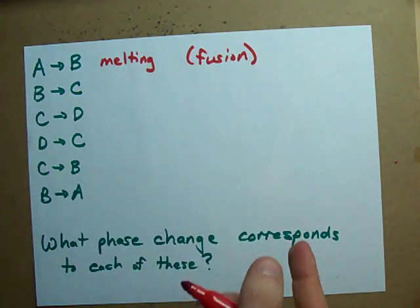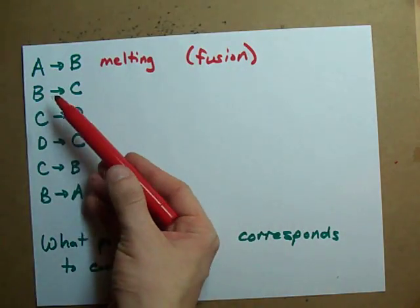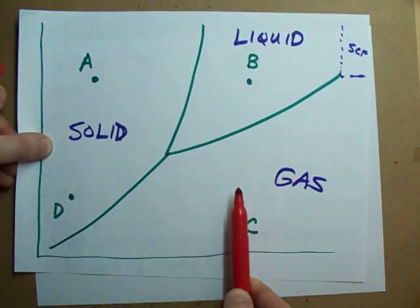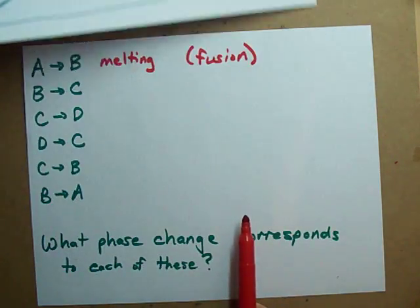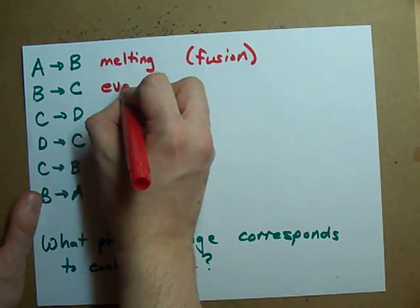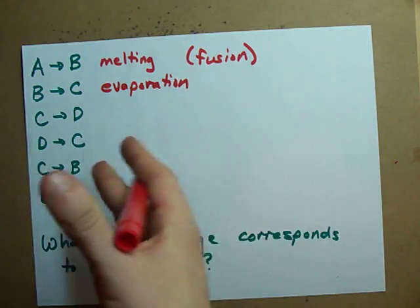It's just the chemistry word we use for melting. From point B to C, liquid to gas. A liquid turning into a gas is called evaporation. You probably knew that from like grade five.